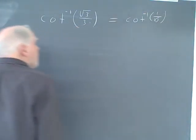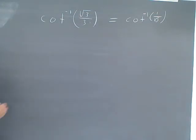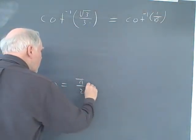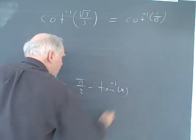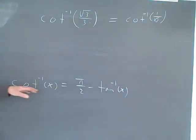Because I'm going to use this identity, the cotangent inverse of x equals pi over 2 minus the tangent inverse of x. And that's how we get out of the cotangent. And if we had to do something that wasn't a common angle, then we would go to the calculator, but there's no cotangent inverse, so you can use this to get your answer.